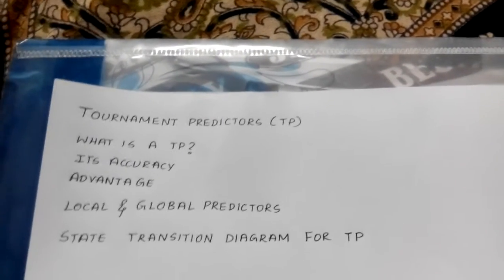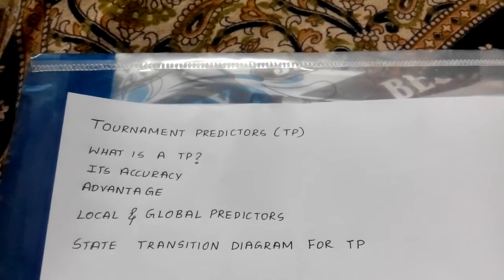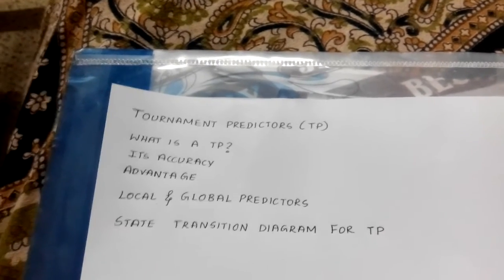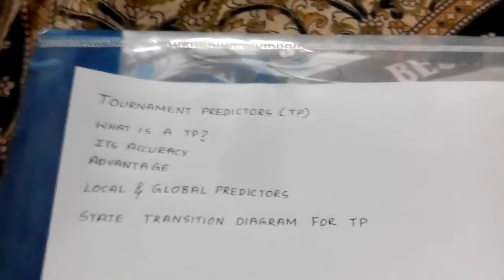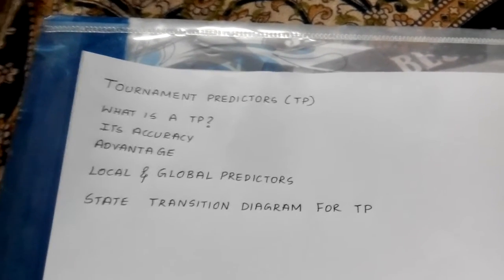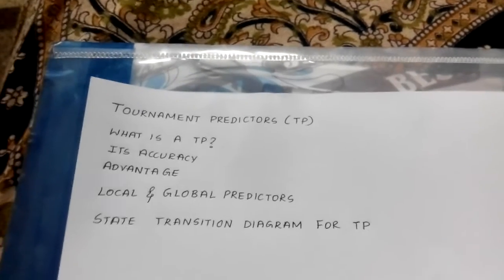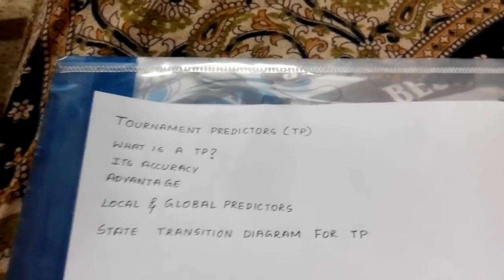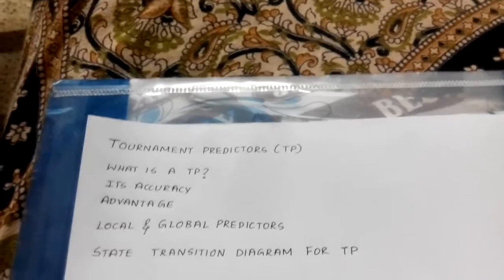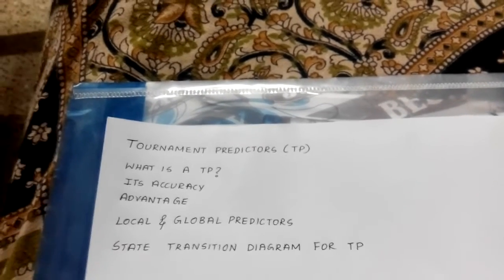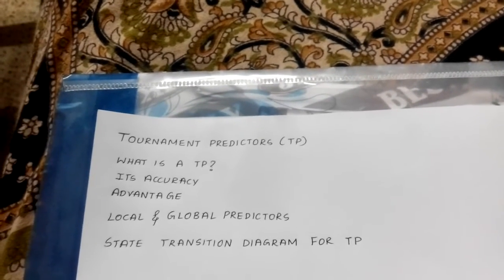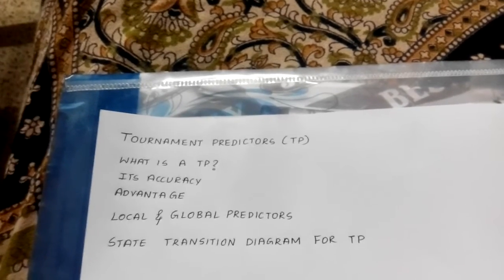Tournament predictors can achieve both better accuracy at medium sizes, ranging from 8K to 32K bits, and also make use of a very large number of prediction bits effectively. Since tournament predictor uses many predictors, it can make use of many prediction bits effectively. Existing tournament predictors use a 2-bit saturating counter per branch to choose among 2 different predictors based on which predictor — local, global, or even some mix — was most effective in the recent predictions.